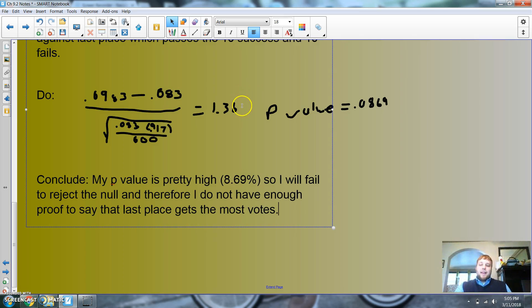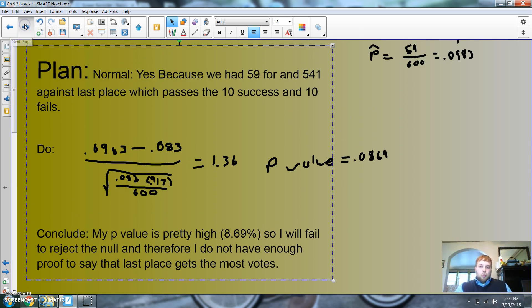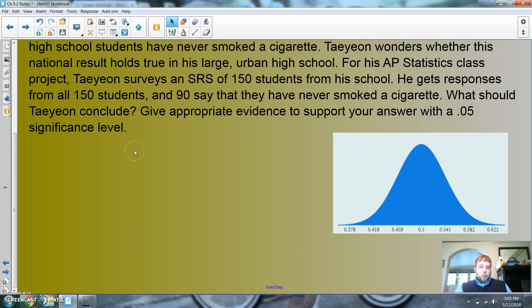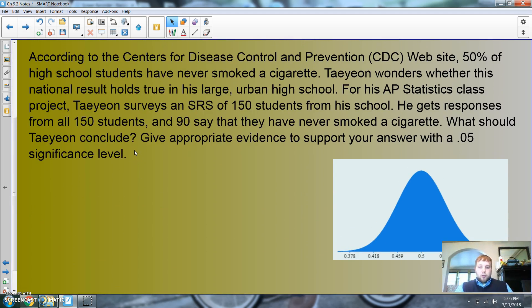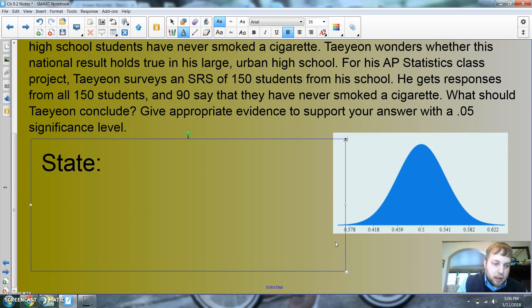Alright, that is how you do that. We'll take a look at one more. I don't know if I'm gonna do state, plan, do, conclude on it. We are going to just do the big parts. According to the Center for Disease, 50% of high school students have never smoked a cigarette. So the principal wonders whether the national average holds for a large urban high school.